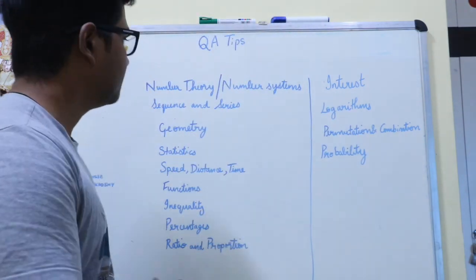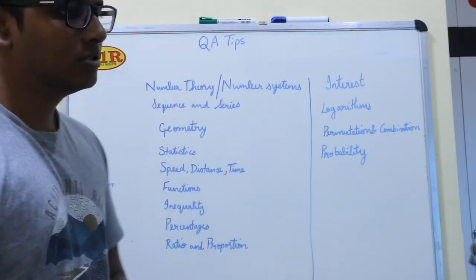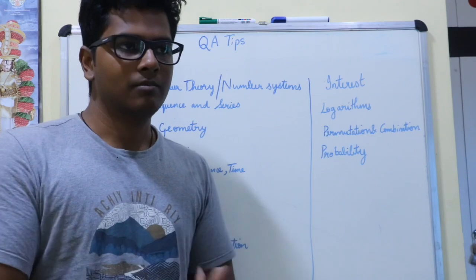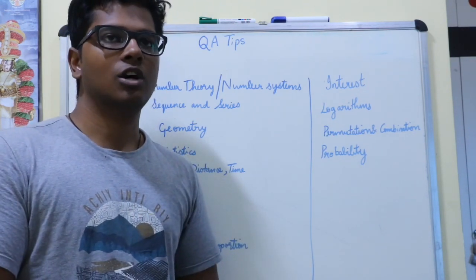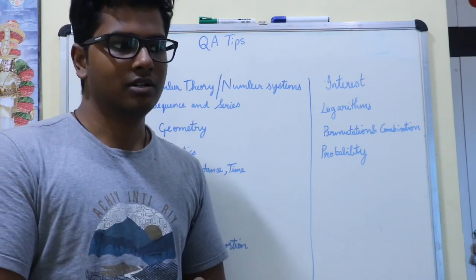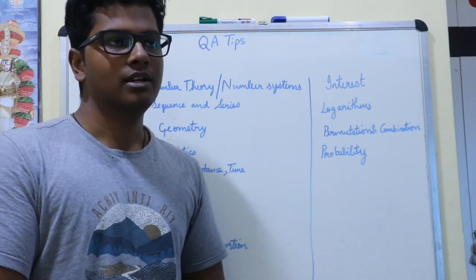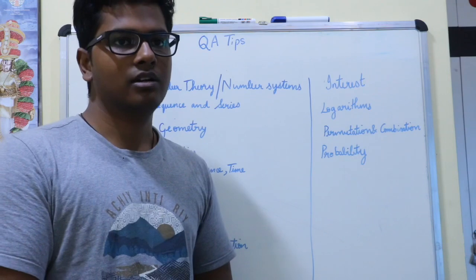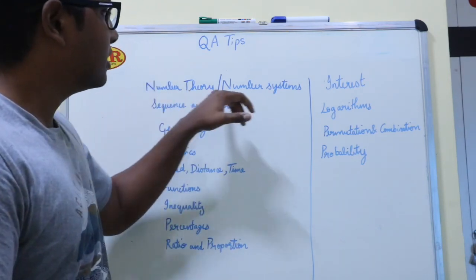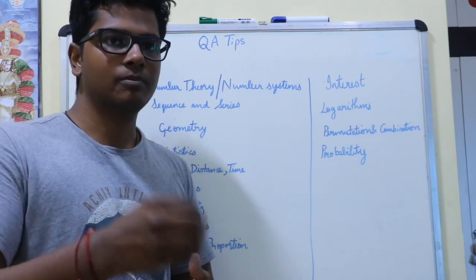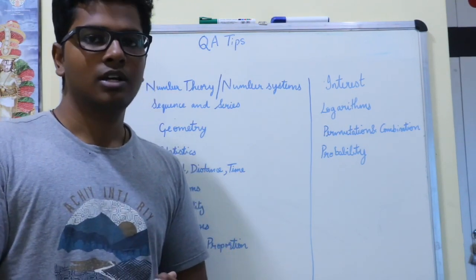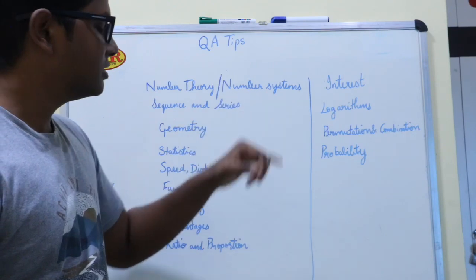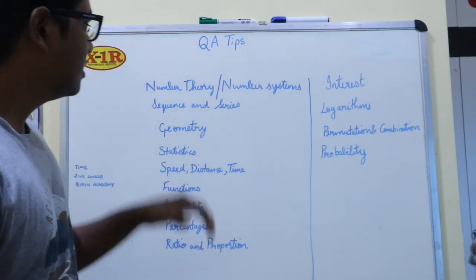The first topic is number theory and number systems. You'll have to learn properties of numbers such as prime, co-prime, even, odd, and how to find the remainder of a particular operation — say, a huge number divided by 7. Number theory gives you certain properties of numbers which help you solve problems faster. It also involves HCF, LCM, and the likes.